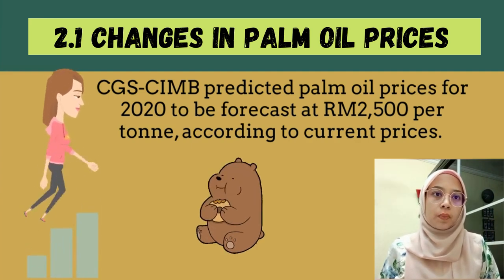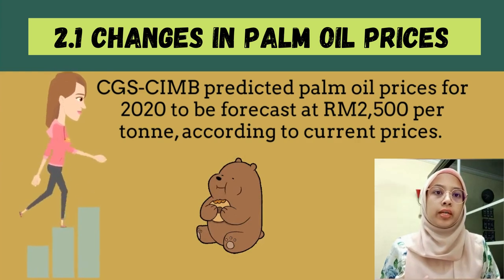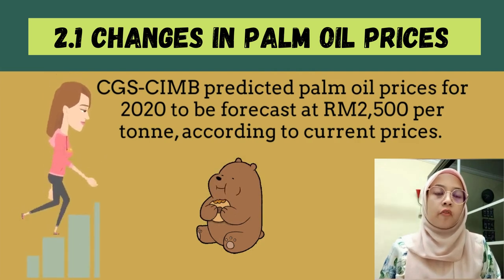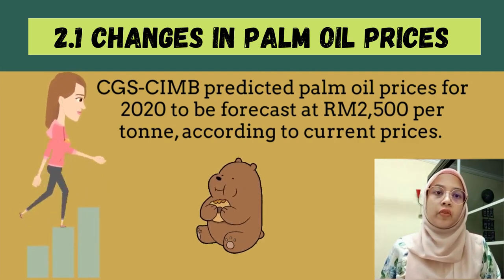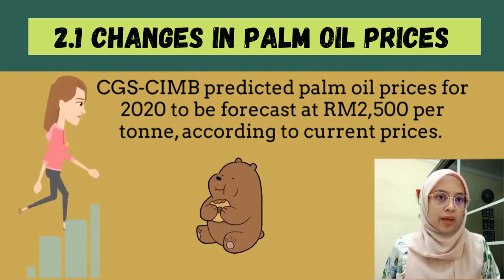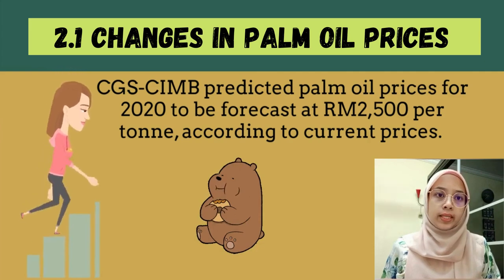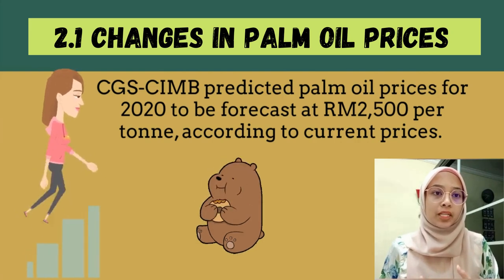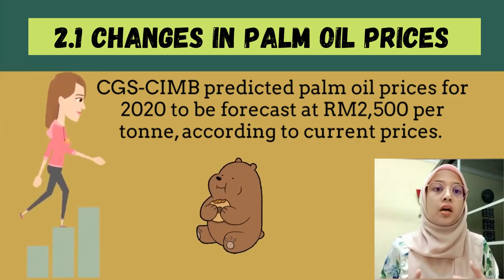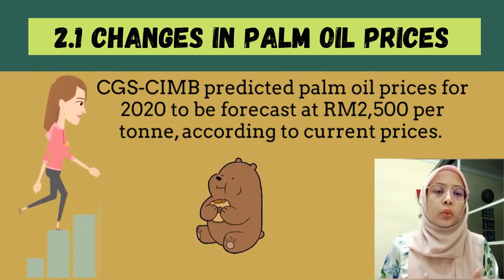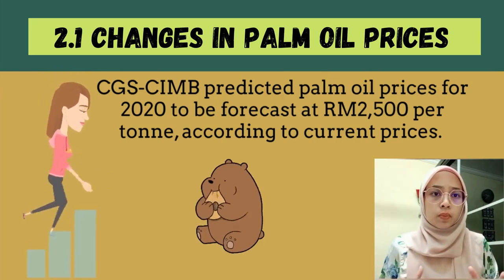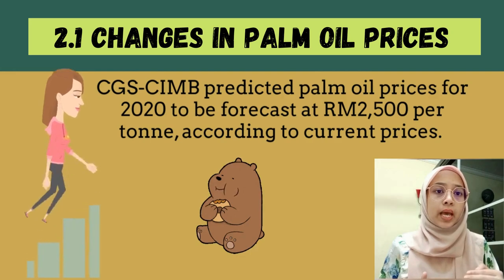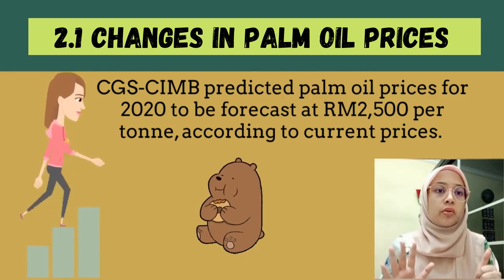The second determinant is changes in palm oil prices. On 27 October 2020, according to CIMB, the predicted palm oil price for 2020 was forecast at 2,500 ringgit per ton. In fact, the price in 2020 remained above 3,000 ringgit. They estimated that if this continues, large consumers would need to pay an average of 2,600 to 2,650 ringgit.